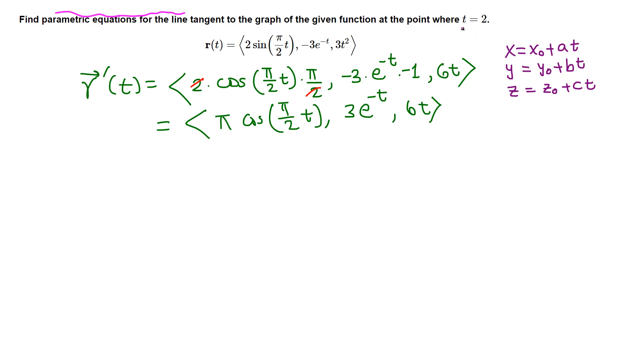We're given t = 2, so plug that in to get a vector parallel to the tangent line—that's the direction vector. Plugging t = 2: π/2 times 2, the 2s cancel. Cosine π equals -1, so -π. Here, e^(-2), which is 3/e².